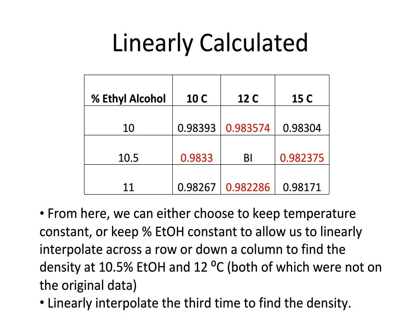So from here, as I said before, we want to linearly interpolate a third time to get the middle value, which I have wrote bl here standing for bilinear interpolation. So we want to linearly interpolate either, once again, either keeping percent ethyl alcohol constant or the temperature constant. And try this out for yourself before you go to the next slide and see if you get the same value. You definitely should.